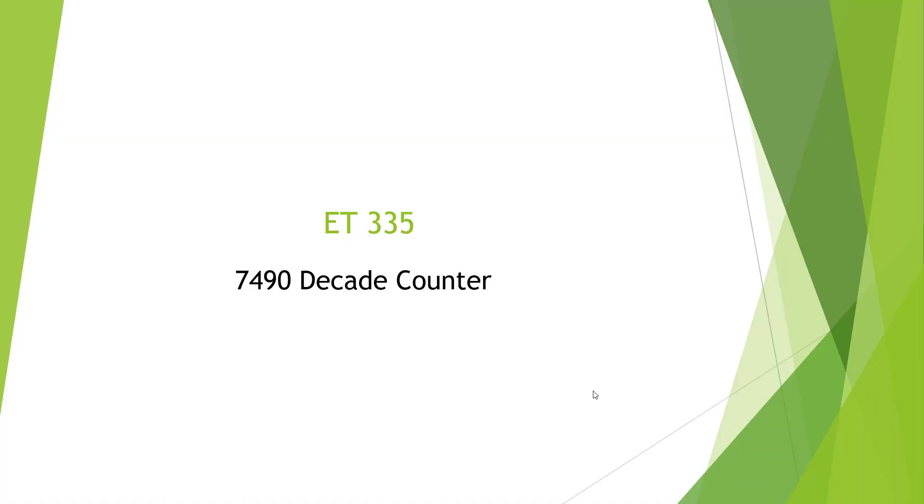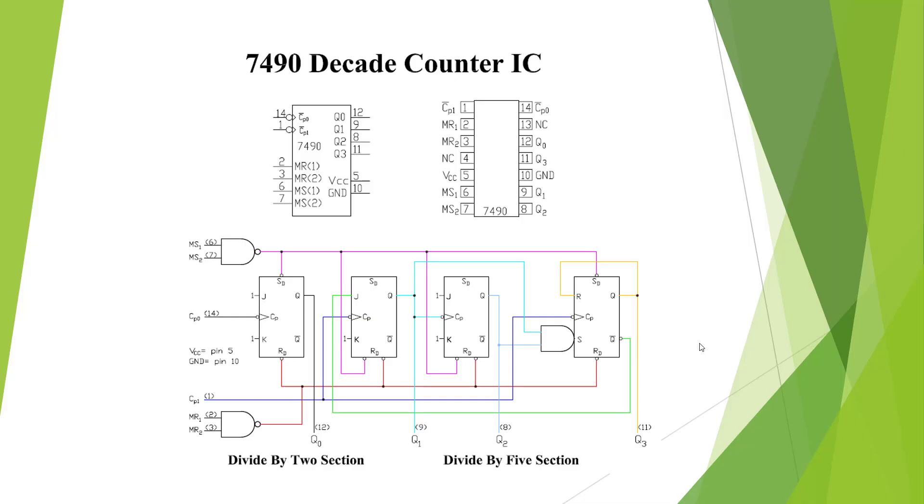Welcome to the ET335 presentation on the 7490 Decade Counter. This is the 7490 Decade Counter IC. It is a counter specially designed to do a 0 to 9 count, which is BCD, binary coded decimal. It divides by 10.